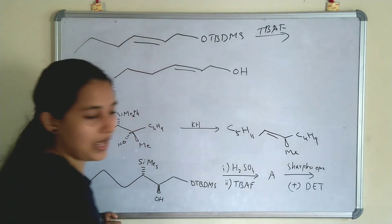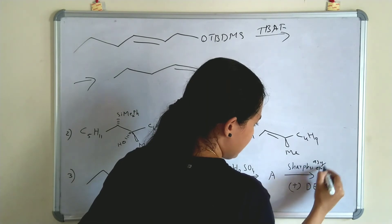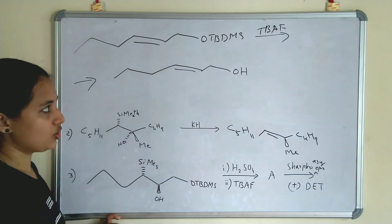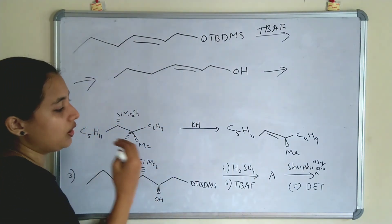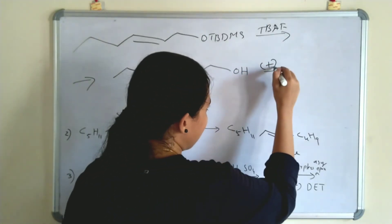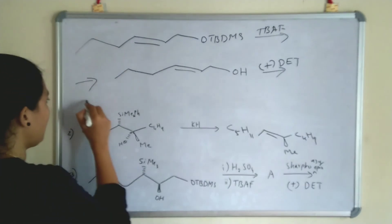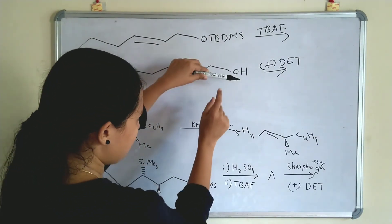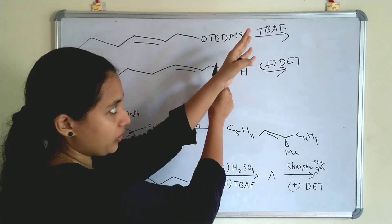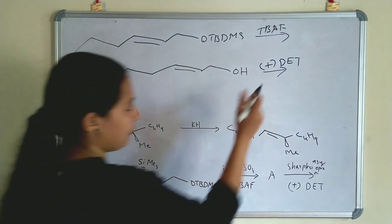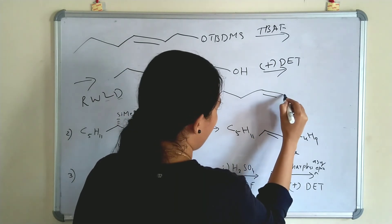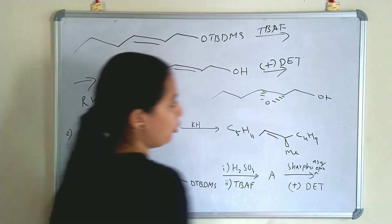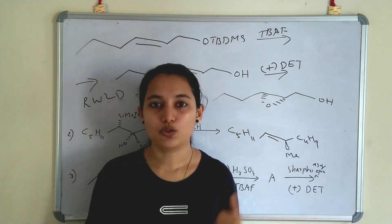Next, Sharpless asymmetric epoxidation is applied with (+)-DET. We already discussed Sharpless asymmetric epoxidation in another video, including the tricks for writing the product. With (+)-DET: the rule is right wedge, left dash. OH is in this position, so we rotate to vertical position — right OH becomes left OH, so for left it is dash with (+)-DET. The product has an epoxide formed below the plane. These were the examples for Peterson Olefination.